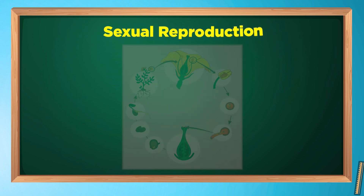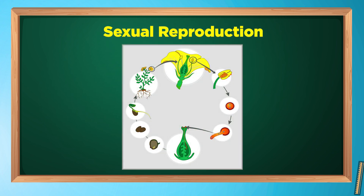Sexual reproduction starts with pollination. The transfer of pollen from anther to stigma is called pollination. Then the male cell fuses with the female cell; this process is called fertilization. After fertilization, the ovary develops into fruit and ovules develop into seeds. When seeds are developed, dispersal of seeds takes place, and a seed under the right conditions will develop into a young plant.